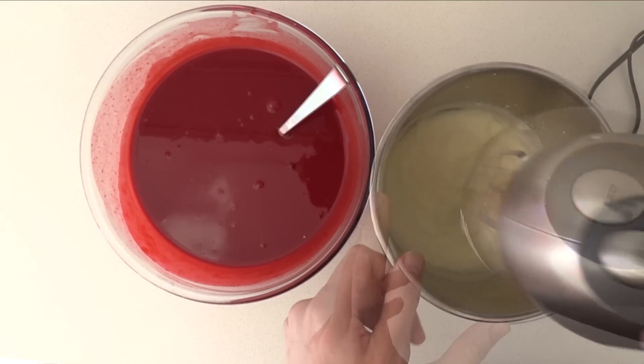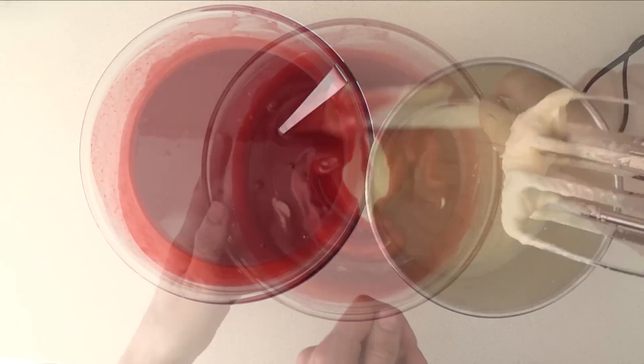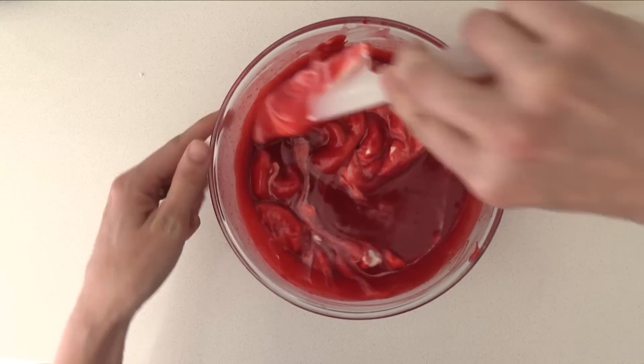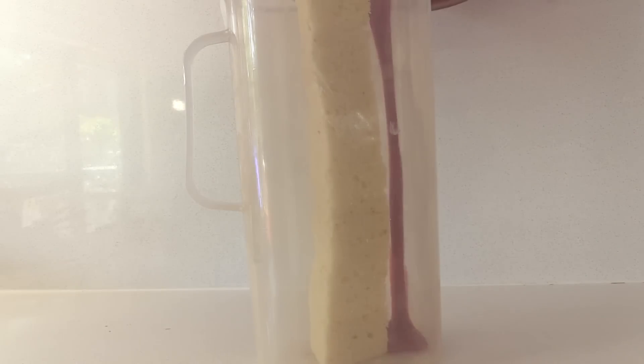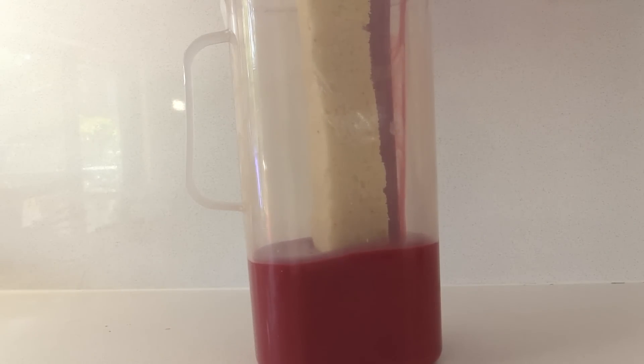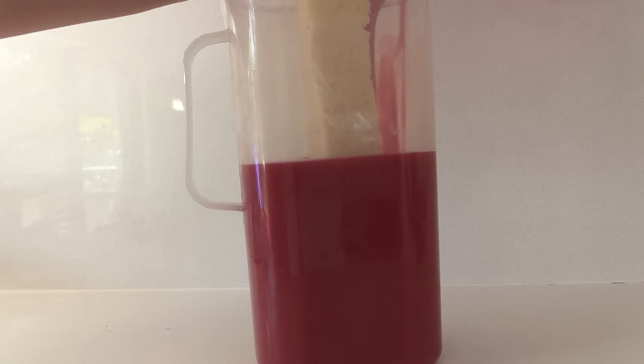Once it is cooled whip the remaining cream to soft peaks and then fold that through. Take the cake out of the freezer and pour that mousse straight into the container. We have froze the cake so that that mousse isn't going to soak into the cake. And you want to put the mousse straight back into the freezer and leave it overnight to set.